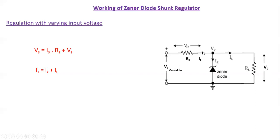So this increase in the current IS will be accommodated by the Zener current IZ. If IS increases, then IZ will increase so that IL is kept constant and the voltage across the load is kept constant.